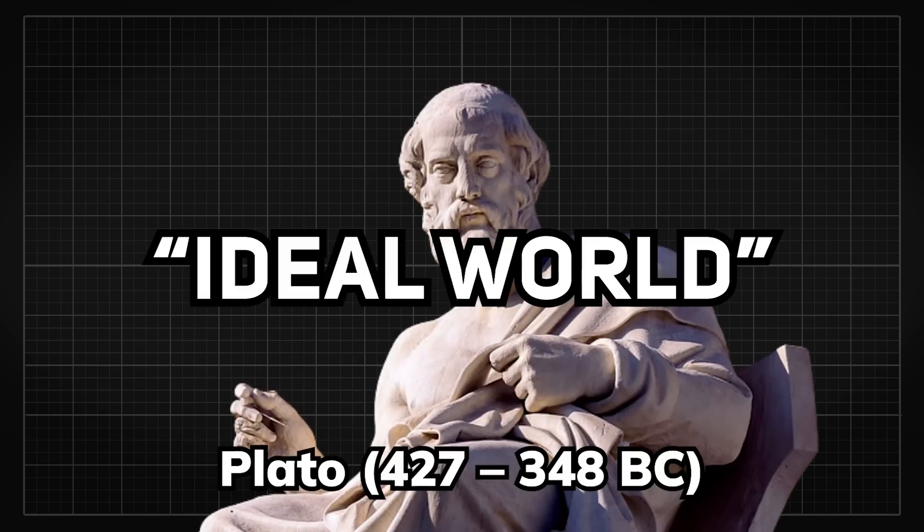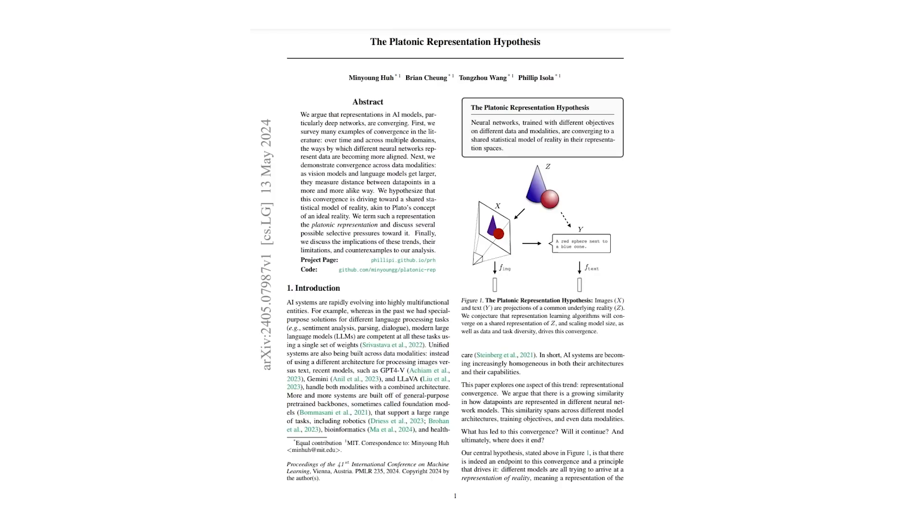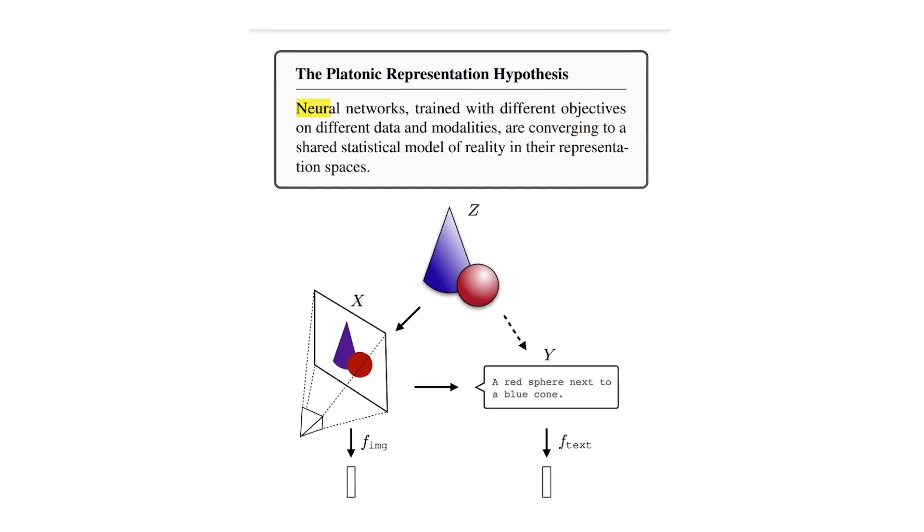Referencing Plato in his ideal world, which we'll get to later, the authors hypothesize that neural networks trained with different objectives on different data and modalities are converging to a shared statistical model of reality in their representation spaces.